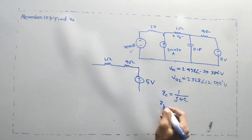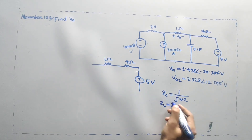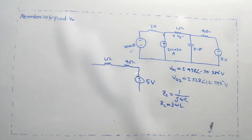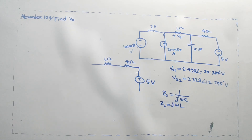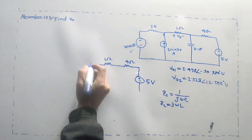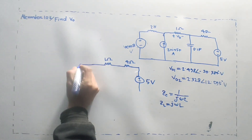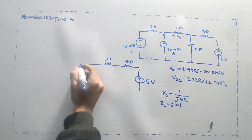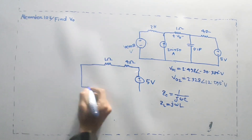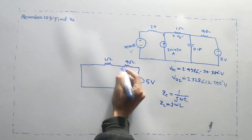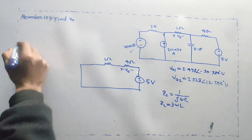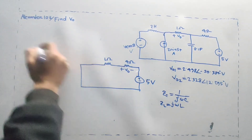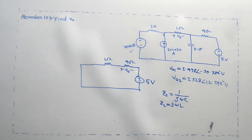For the DC source: ZL equals j omega L. When omega equals 0 for DC, omega 0 means ZL equals 0, which means zero impedance — a short circuit. So the inductor is shorted for DC. The connection of the voltage integral is short, and the voltage source is also short.